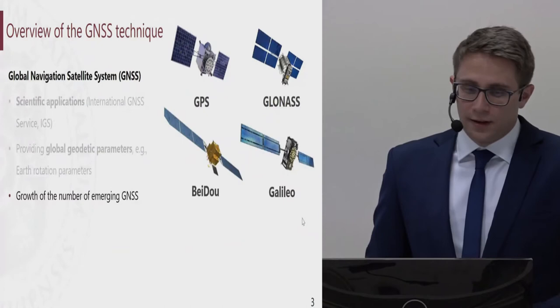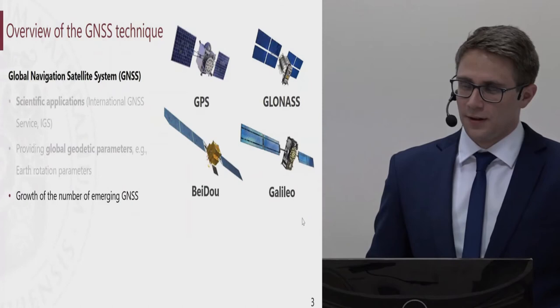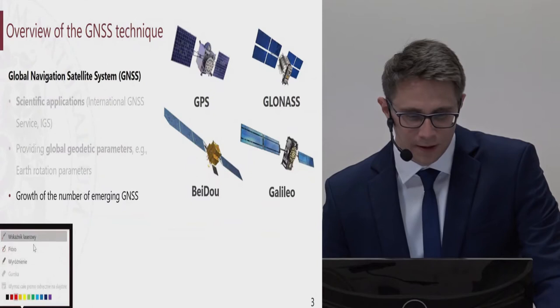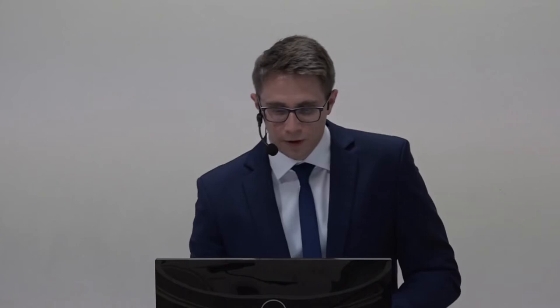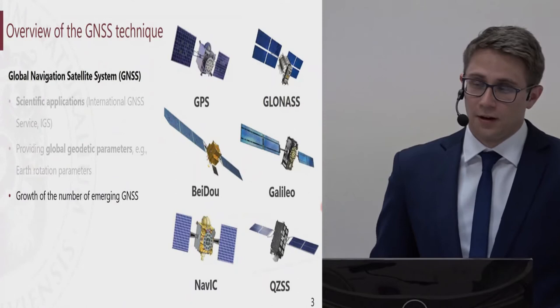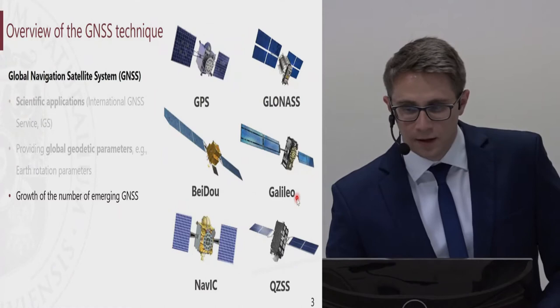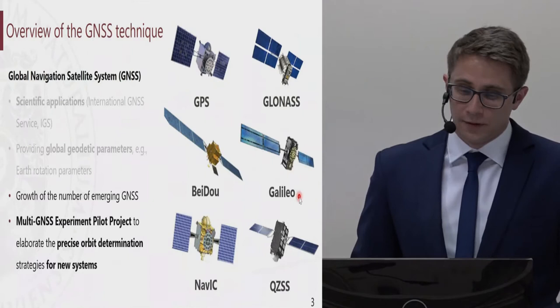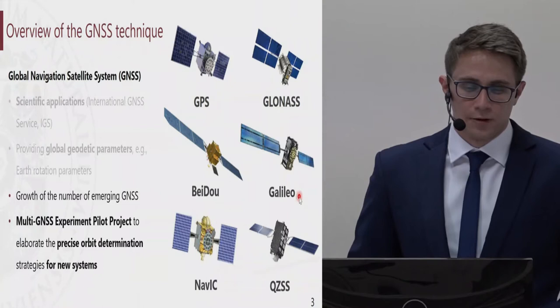Since the last two decades, we are witnessing a significant growth in the number of emerging navigation systems. We have Chinese BeiDou, which is being transformed from a regional to a global system, and the first fully civilian navigation system, European Galileo. Moreover, we have two regional systems being developed: NAVIC and QZSS, which fly above the areas of India and Japan, supporting the global systems. Due to this significant increase, the IGS established a multi-GNSS experimental pilot project to elaborate precise orbit determination strategies for all new systems.